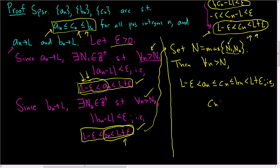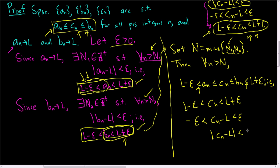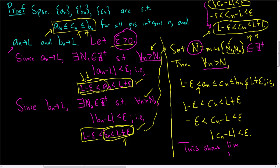So c_n is less than l + epsilon and greater than l − epsilon. If we subtract l from all three sides, we end up with c_n − l less than epsilon and greater than negative epsilon, which is the same as saying the absolute value of c_n − l is less than epsilon. So we started with epsilon greater than zero, we found a positive integer N, such that for all little n greater than capital N, the distance between c_n and l is smaller than epsilon. This proves that the limit as n approaches infinity of c_n is equal to l, and we have proved the squeeze theorem.